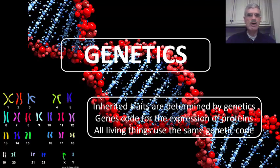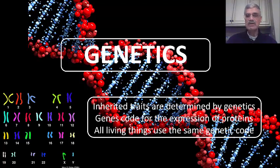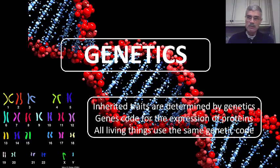Class, we now begin a chapter on genetics, a topic that I think you'll find interesting. The main points of this chapter will be that inherited traits are determined by genetics, genes code for the expression of proteins, and all living things use the same genetic code. And we'll talk about several topics related to genetics.